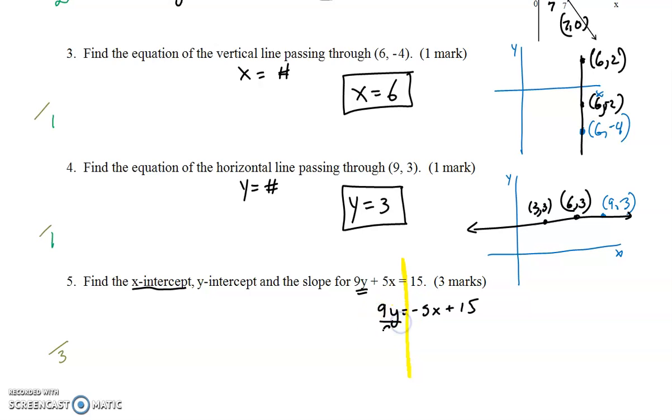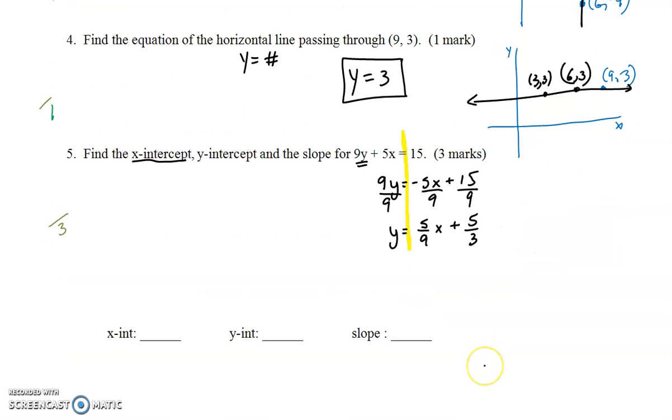Remember to try to keep those equal signs lined up. Now, you divide both of the sides, all of the terms, by the coefficient of y, and you're going to get y = 5/9x, plus, don't forget to reduce, 5/3. And you now have your y-intercept, which is 5/3, your slope, which is 5/9.